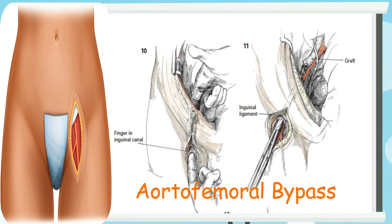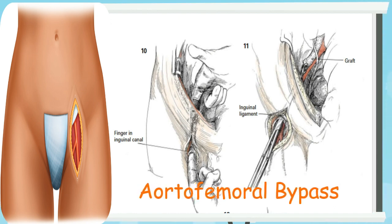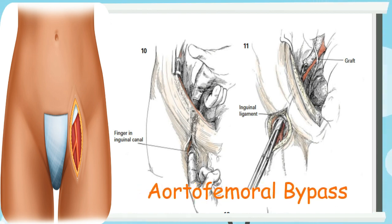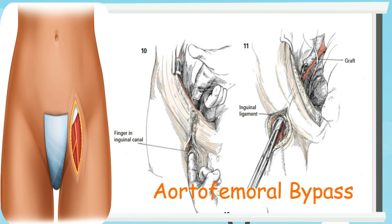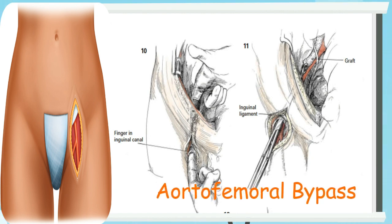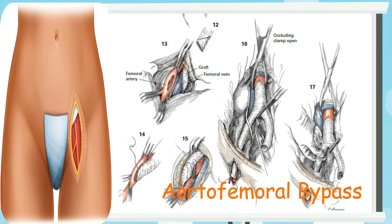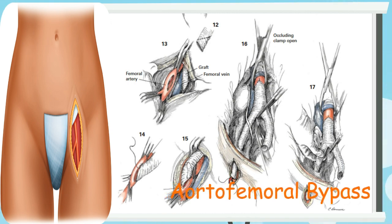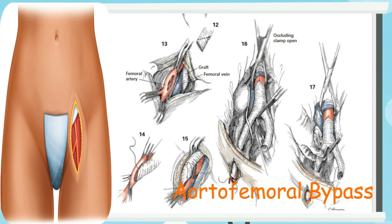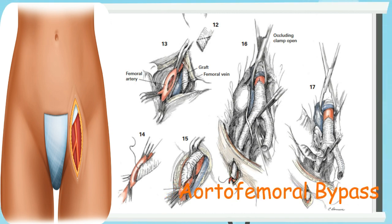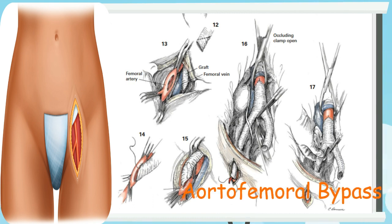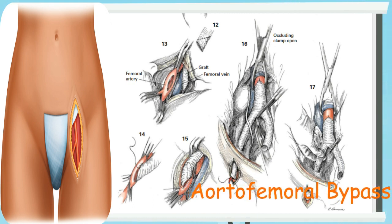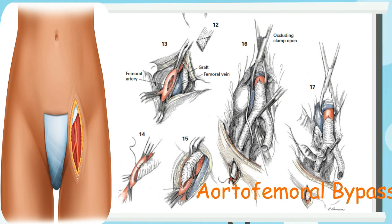It is important to remember that all dissections — aortic and femoral — and the tunnel should be completed before the patient is heparinized. The graft is pulled into the groin incision, Figure 11, and the end beveled, Figure 12. Vascular clamps have been placed on the common femoral, the profunda femoris, and the superficial femoral arteries, as shown in Figure 13.